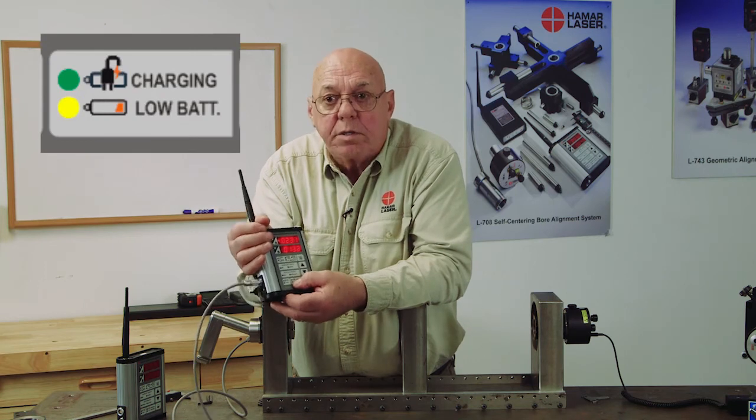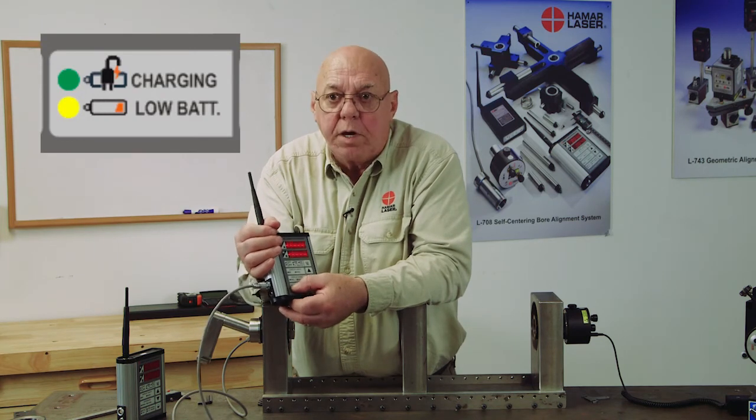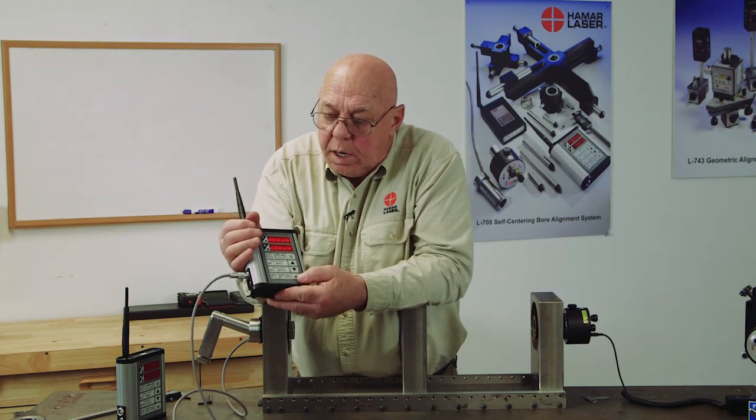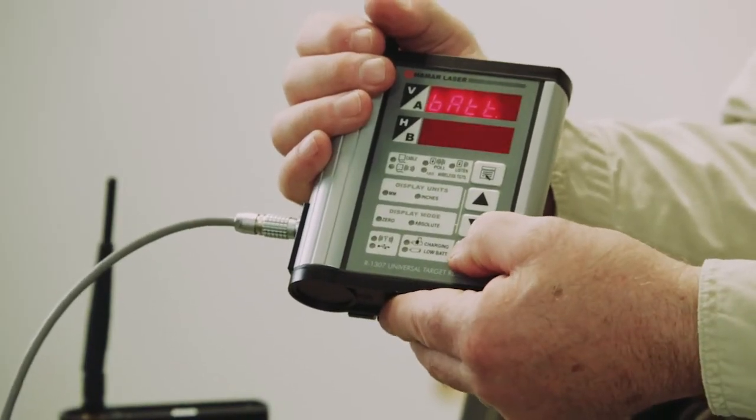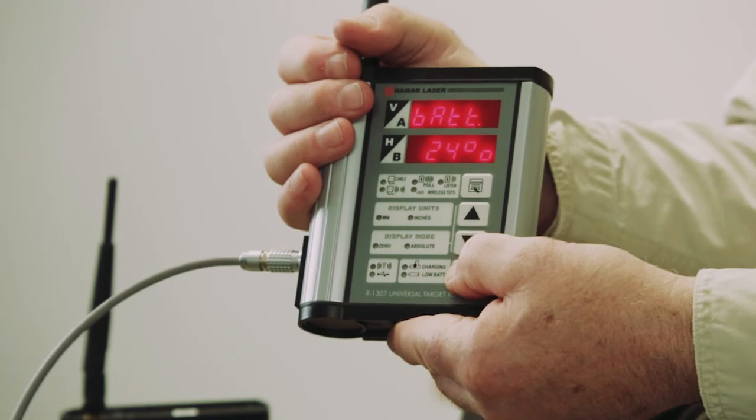If the battery gets low, I'll see that when it's communicating. I see this down here. This is the same as the R1307B 2.4. I press the button momentarily and I get the battery life remaining.